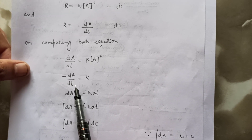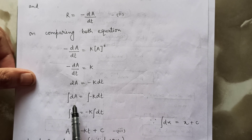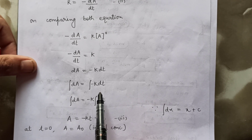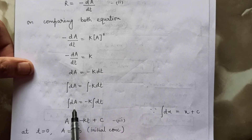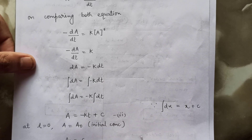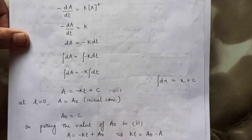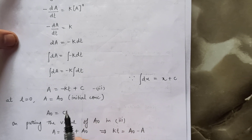So minus da upon dt equals k, because a to the power zero is 1. On rearranging, da equals minus k dt. Integrating both sides: integration of da equals minus k times integration of dt. Since k is a constant, it comes out of the integration. Using the formula that integration of dx equals x plus c, integration of da is a and integration of dt is t, with the constant written on the right-hand side only.